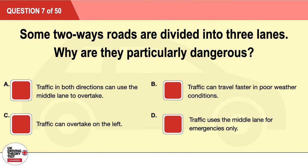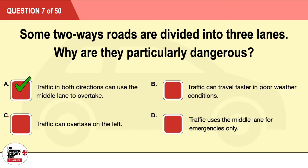Question 7: Some two-way roads are divided into three lanes. Why are they particularly dangerous? A: Traffic in both directions can use the middle lane to overtake. B: Traffic can travel faster in poor weather conditions. C: Traffic can overtake on the left. D: Traffic uses the middle lane for emergencies only. The correct answer is A: traffic in both directions can use the middle lane to overtake.